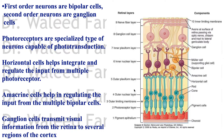Horizontal cells synapse with multiple photoreceptors — they integrate and regulate the input from multiple photoreceptors. The amacrine cells help in regulating the input from multiple bipolar cells. So amacrine cells regulate input from the bipolar cells, and horizontal cells regulate the input from the photoreceptors.